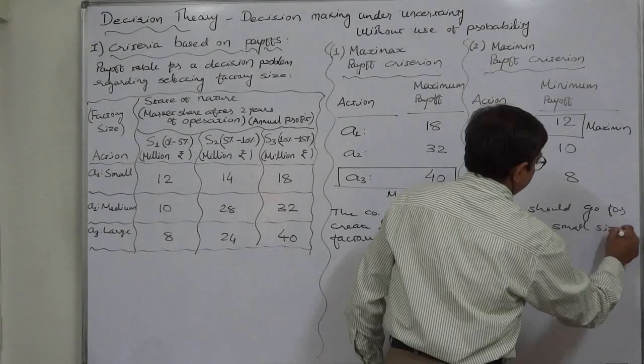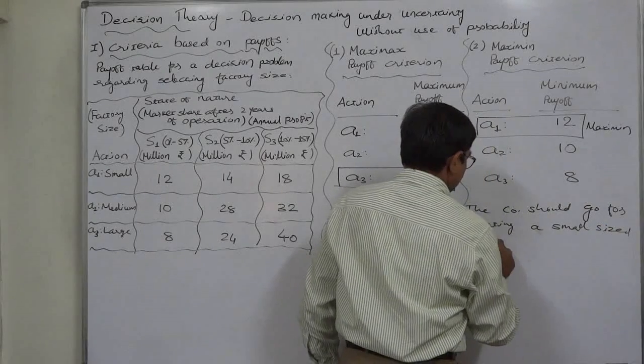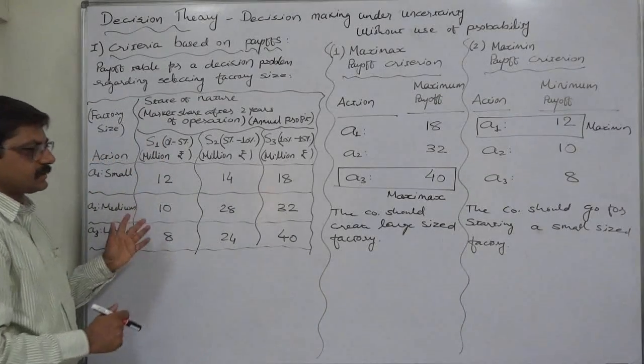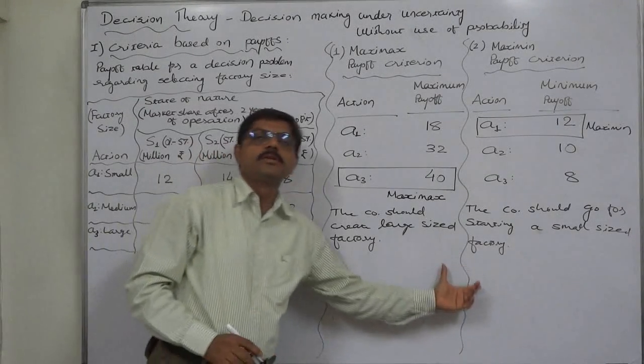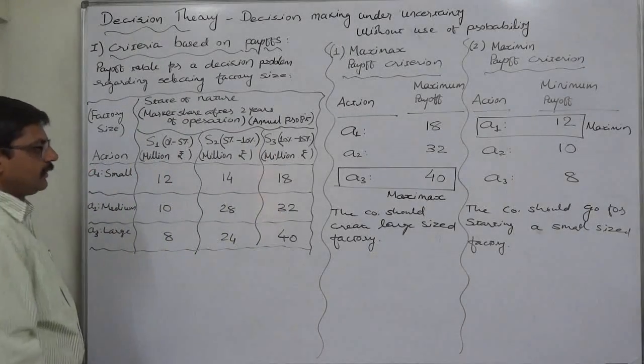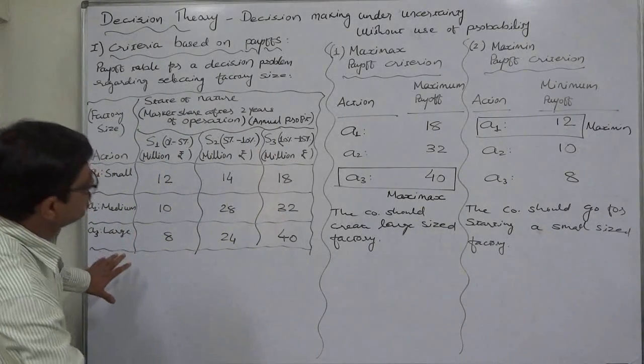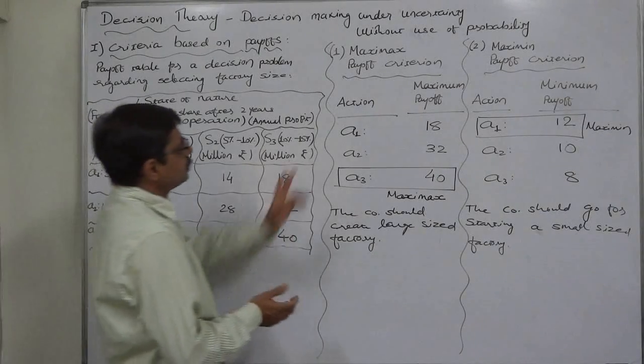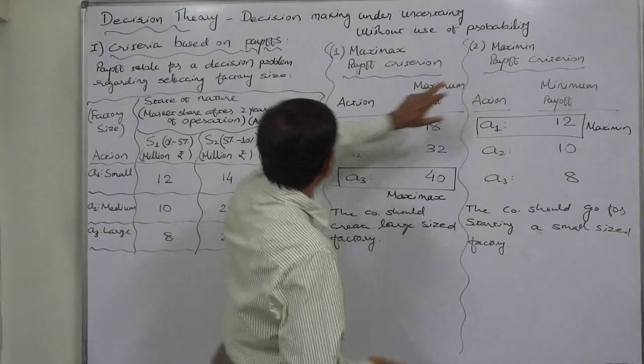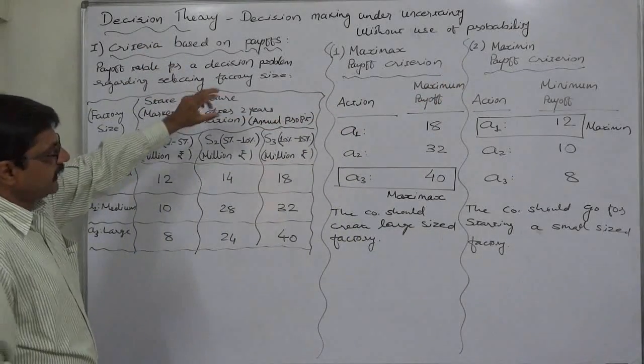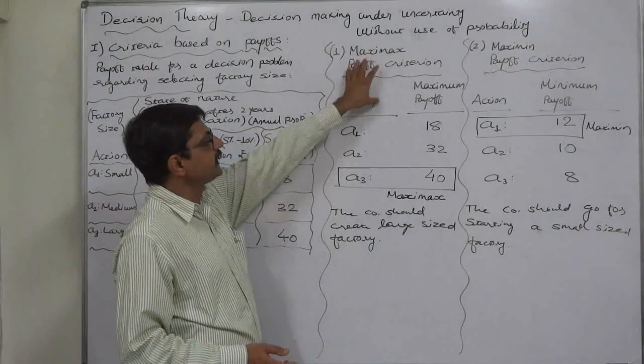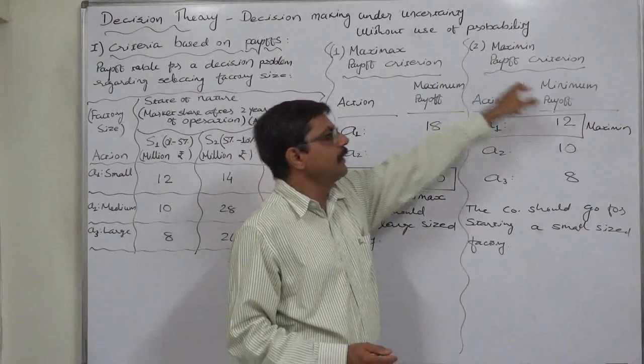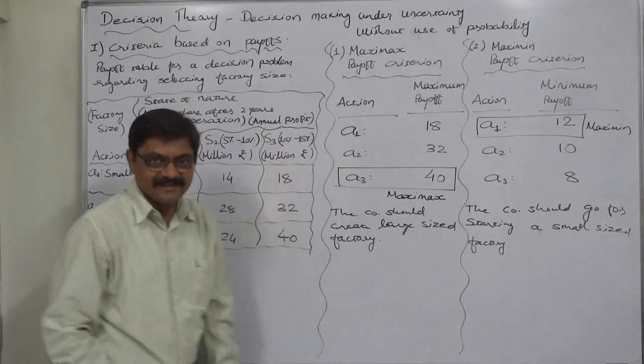You can read the whole case in the notes below the lecture on the channel. So in this lecture we used or rather we discussed about the two main criteria based on the payoffs, and there were maximax, maximum of the maximum payoff, and maximin, that means maximum of the minimum payoff. That's it, thank you very much.